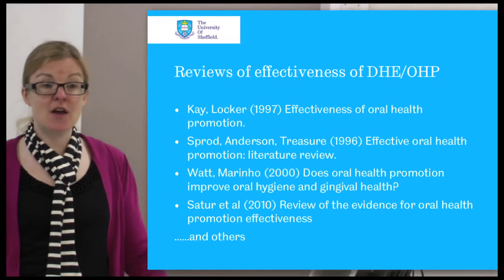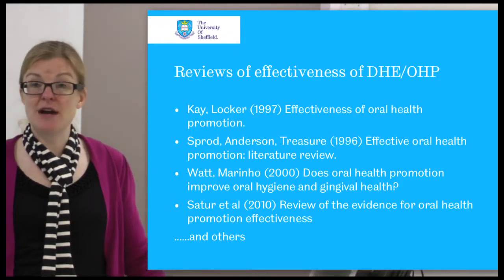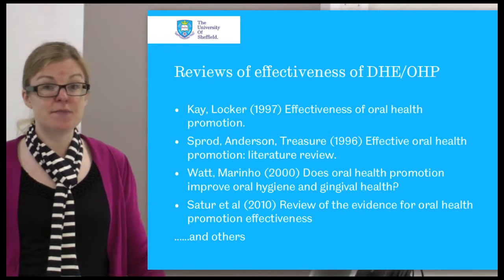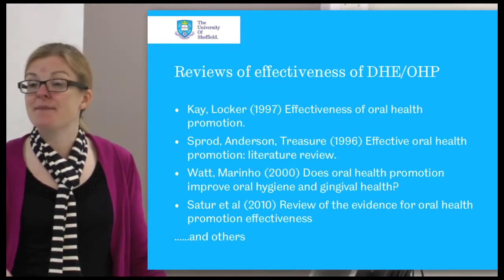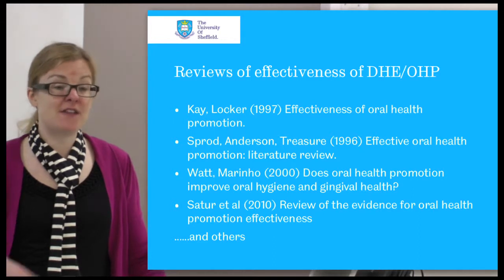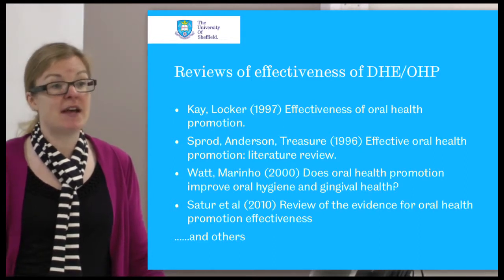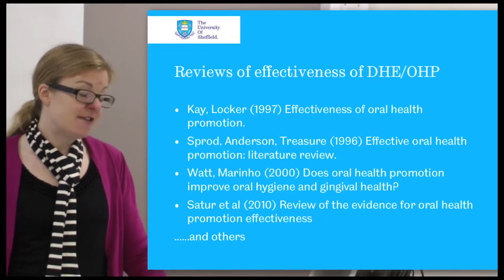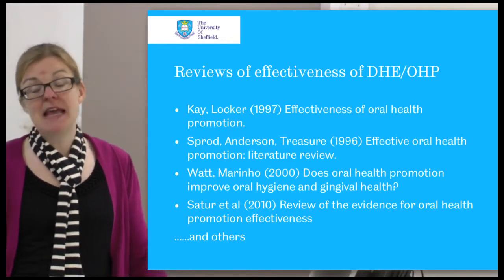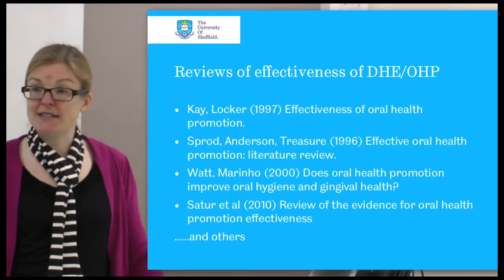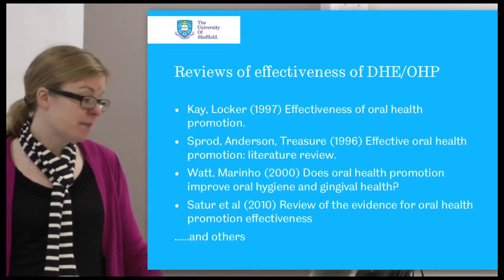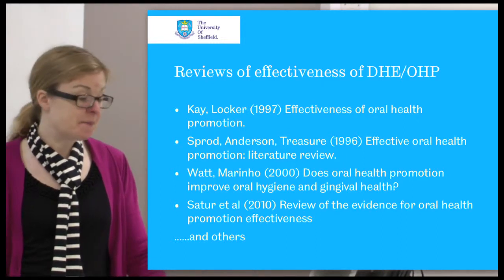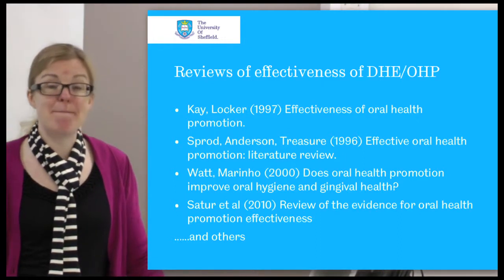They've varied in terms of the criteria that they've used. The strength of systematic reviews comes from the fact that they have strict criteria about which papers are included. So they've varied slightly by the aim of the review and the criteria used, and obviously some of them are older and have older papers in them.